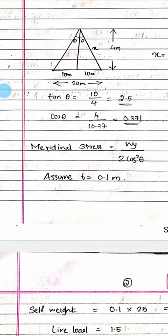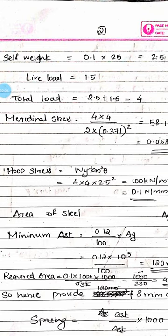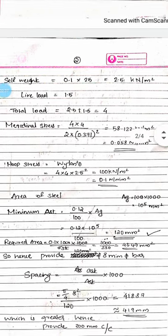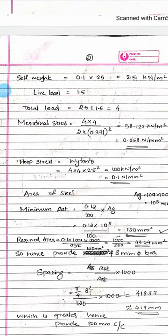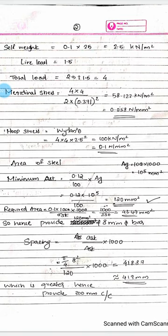We assume the thickness of the shell is 0.1 meters. The self-weight equals thickness into unit weight of concrete: 0.1 into 25, which equals 2.5 kN per meter square. The live load is 1.5 kN per meter square, giving a total load of 4 kN per meter square.